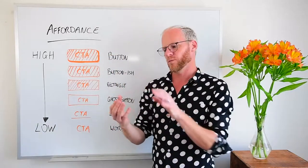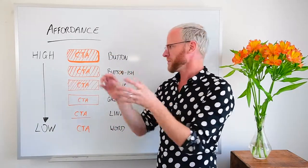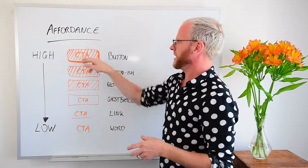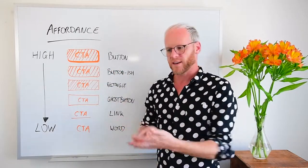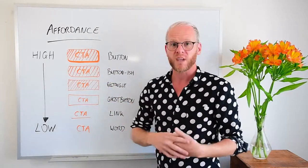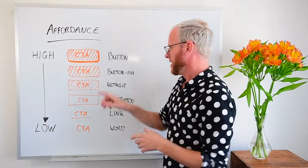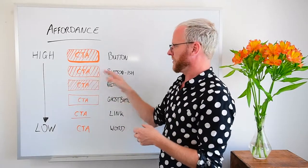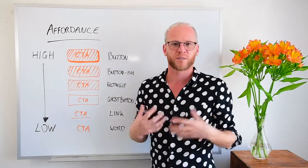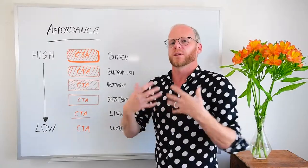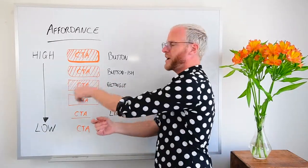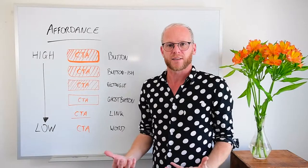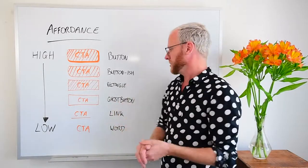At the top we have a button with some depth — it's got a drop shadow, it's a little bit 3D and it has rounded corners. That looks like a clickable button. Beneath that we have no drop shadow, it's just a flat button but it still has rounded corners, so it looks like a button. Third, we take away the rounded corners and it's just a rectangle — doesn't look that clickable.